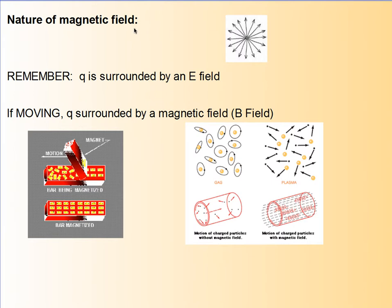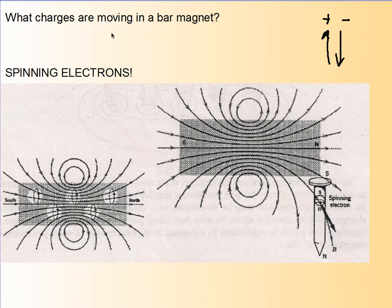The nature of a magnetic field is really cool. Remember, every charge is surrounded by an electric field. And it turns out, if I have a charge that's moving, it is surrounded by a magnetic field as well. You've heard of the electromagnetic spectrum — this is exactly where it comes from. What charges are moving in a bar magnet? Well, in any metal there are electrons, and it is the spin of the electrons that causes the magnetic field.